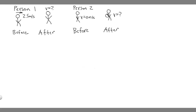In this problem, we're told a 65-kilogram person throws a 0.045-kilogram snowball forward with a ground speed of 30 meters per second. A second person with a mass of 60 kilograms catches the snowball. Both people are on skates. The first person is initially moving forward at 2.5 meters per second, and the second person is initially at rest. What are the velocities of the two people after the snowball is exchanged? Disregard friction between the skates and the ice.